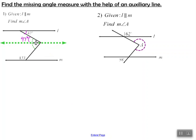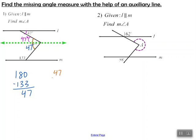Likewise, we can look at this bottom part of the problem — these two parallel lines cut by a transversal. The angle marked 133 degrees and the bottom portion of the measure of angle A are consecutive interior angles, and consecutive interior angles are supplementary. So when we take 180 and subtract 133, we're left with 47. So this bottom portion of angle A is also 47 degrees. When we add the two parts together, 47 plus 47 gives us 94. So the measure of angle A is equal to 94 degrees.